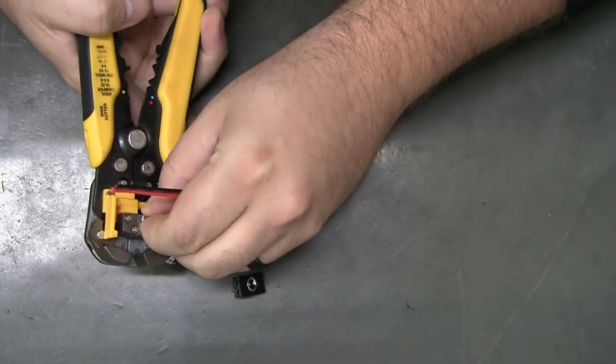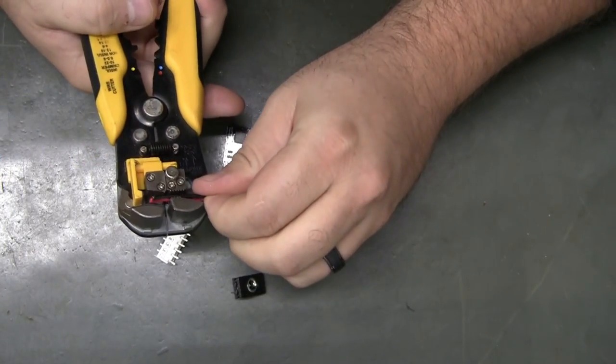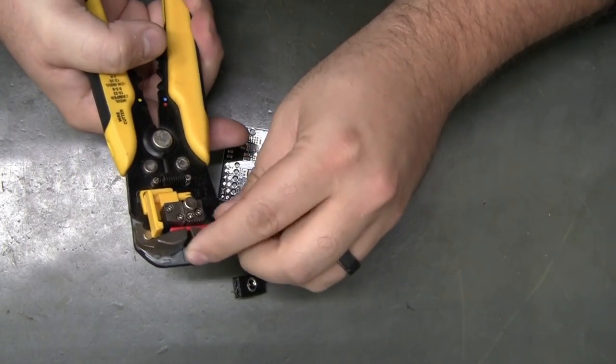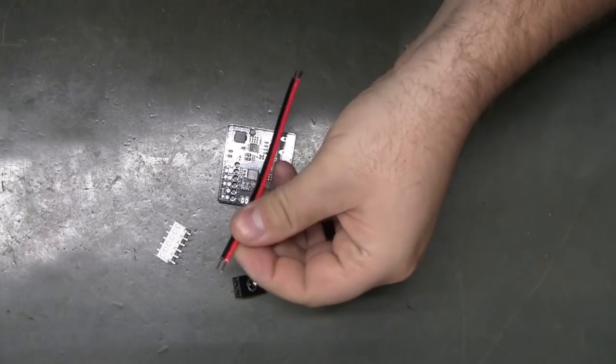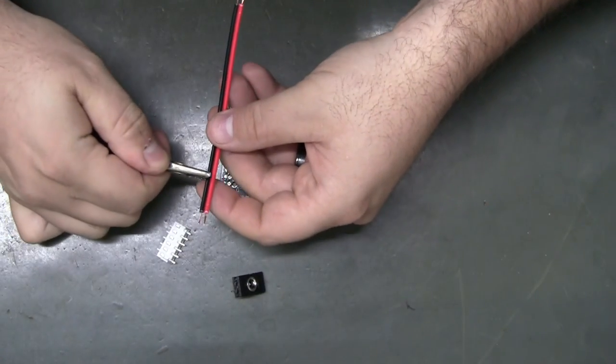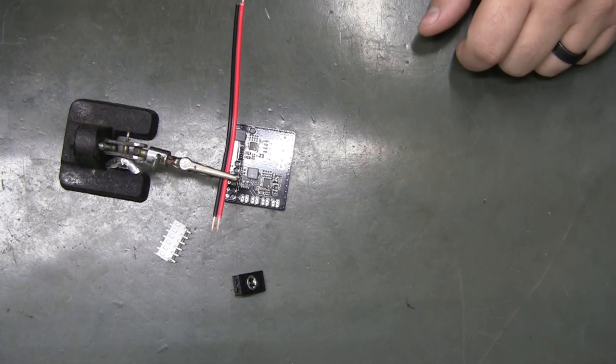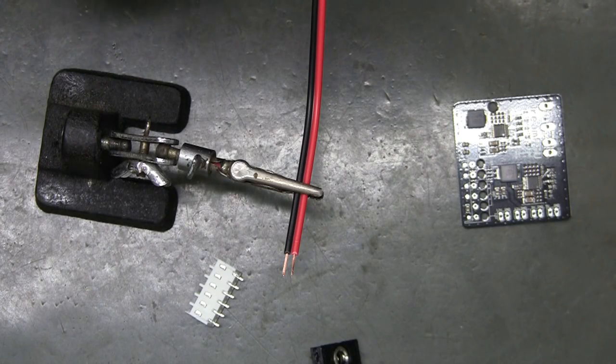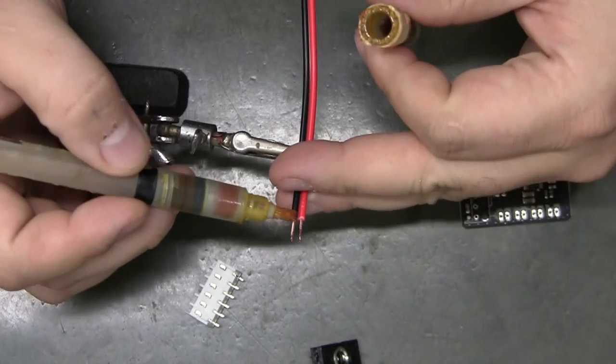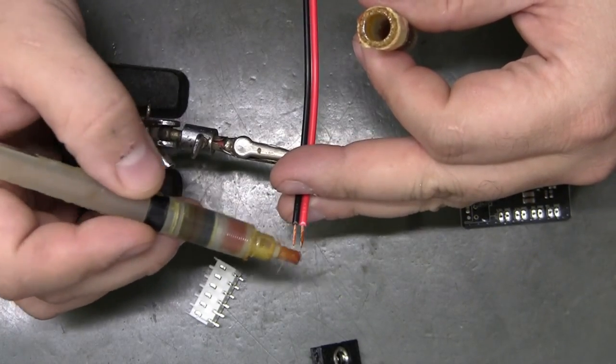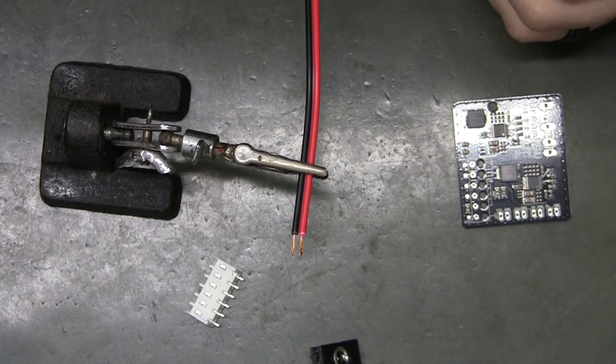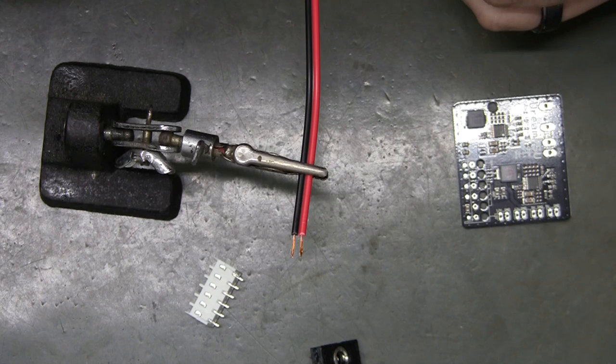These are the wire strippers I like to use. Makes it very easy. But you're more than welcome to use a knife or whatever you normally use. I do like to add some flux. This is rosin flux. And I am using a no-clean core solder.